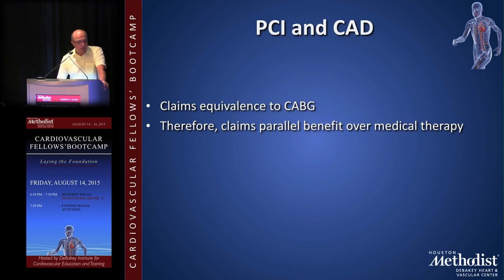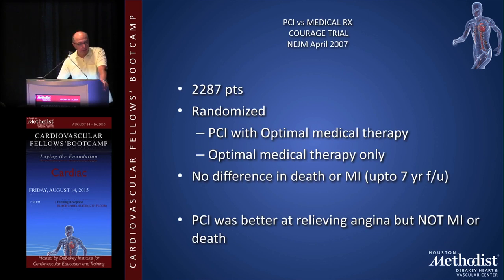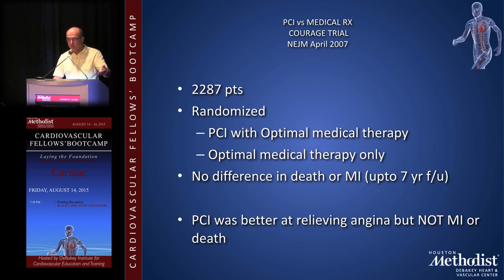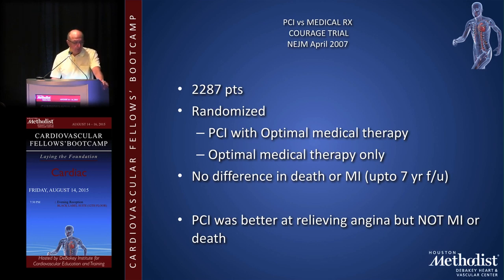When it comes to PCI and coronary artery disease, PCI has claimed equivalence to CABG and therefore claims parallel benefit over medical therapy. The COURAGE trial in 2007 in the New England Journal of Medicine looked at close to 2,500 patients randomized between PCI and optimal medical therapy in the modern era — including statins and beta-blockers — and showed no difference in death or MI with up to seven years of follow-up. PCI was better at relieving angina, which is extremely important, but it was not more effective at preventing myocardial infarction or death.